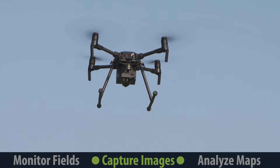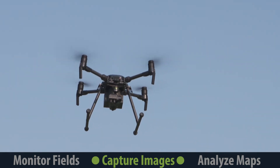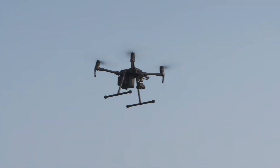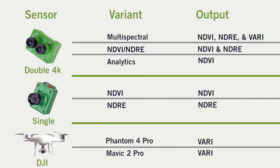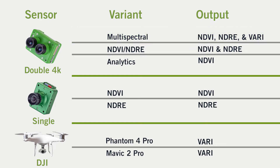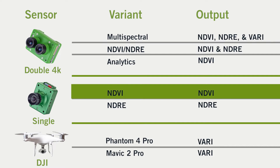Any Sentera or DJI sensor can be used to create a crop health map. The lenses your sensor has determines what wavelengths of light it captures and what type of crop health map it can create. Some sensors, such as the Double 4K multi-spectral, can capture multiple types of map in one flight. Other sensors, such as the Single NDVI, are only able to capture one specific type of map.